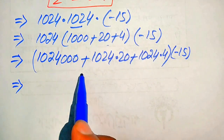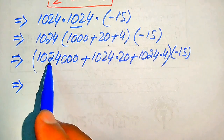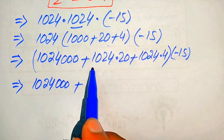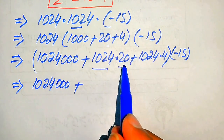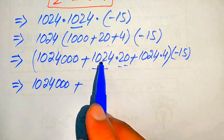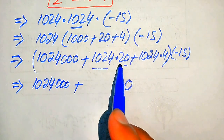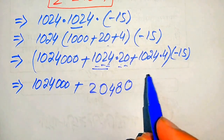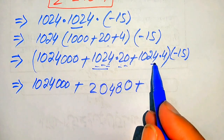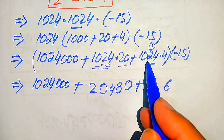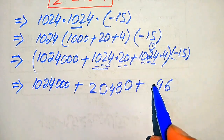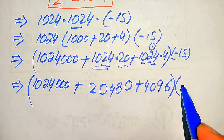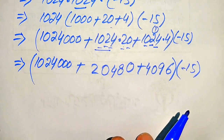In the next step we multiply these pairs of numbers. We get 1024 times 1000 as 1024000. Then multiplying 1024 by 20: 4 times 20 is 80, write 0 carry 8; 2 times 20 is 40 plus 8 is 48; giving 20480. Multiplying 1024 by 4 gives 4096. We then sum all three values and multiply the result by minus 15.